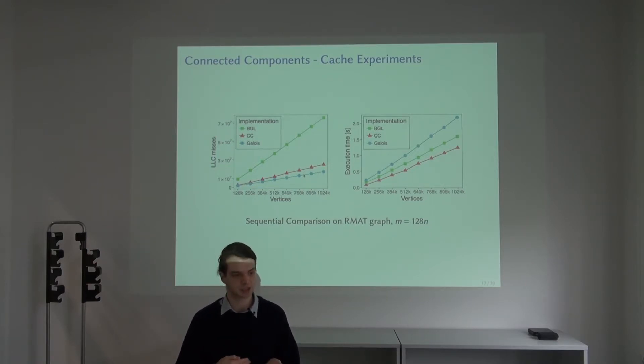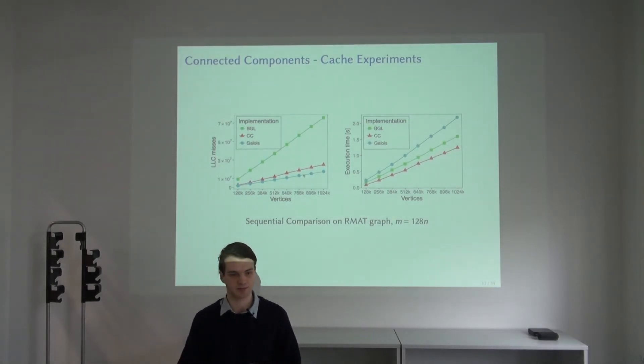We also measured the number of instructions and found that it does perform much fewer instructions than our algorithm, but the number of cache misses outweighs this in terms of the execution time sequentially. On the other hand, Galois does perform slightly less cache misses, but the instructions it performs are very expensive. They are not able to benefit from having slightly fewer cache misses because their algorithm is inefficient in other terms.